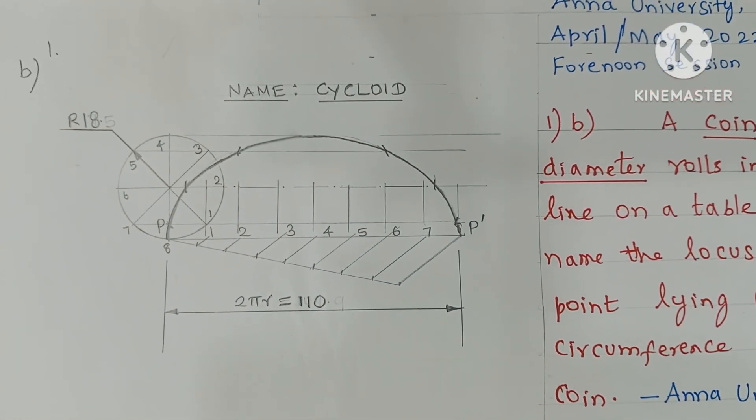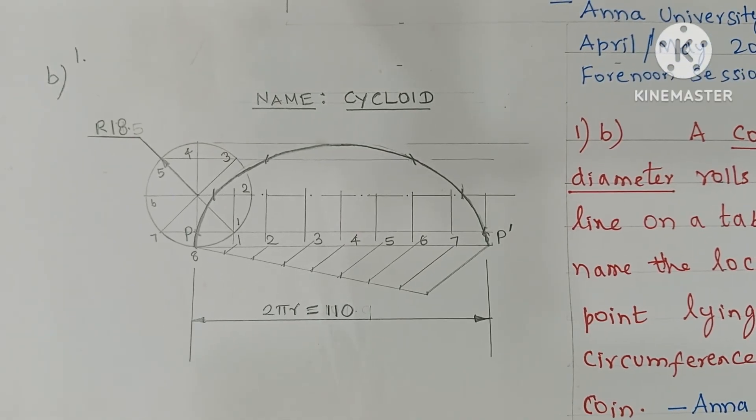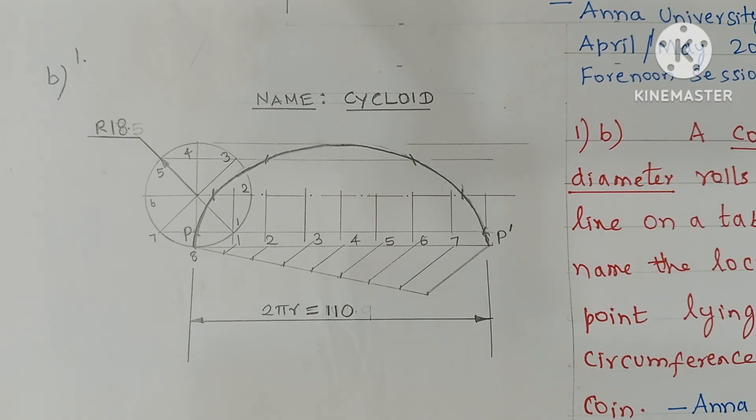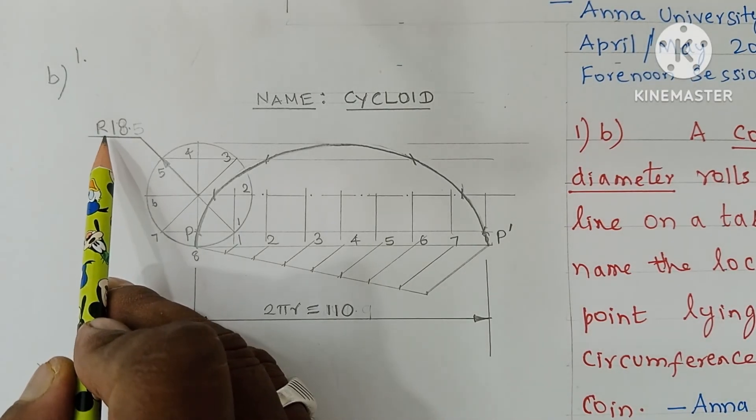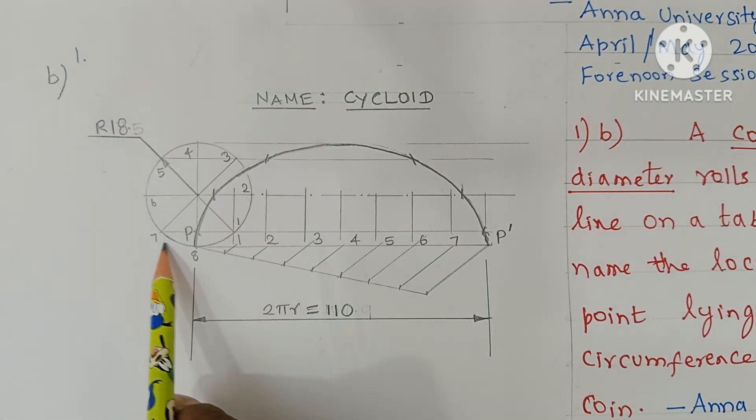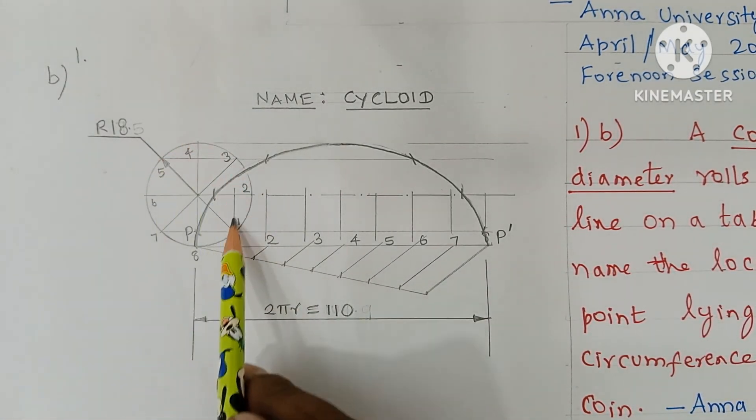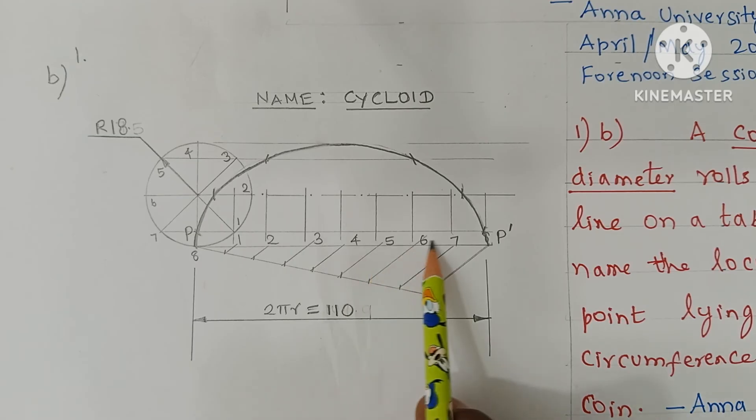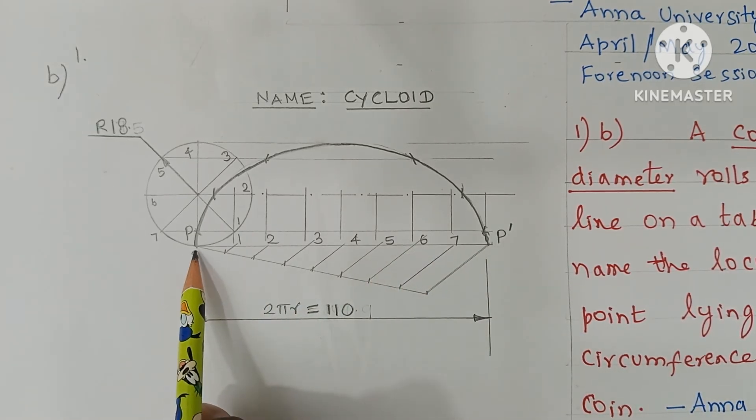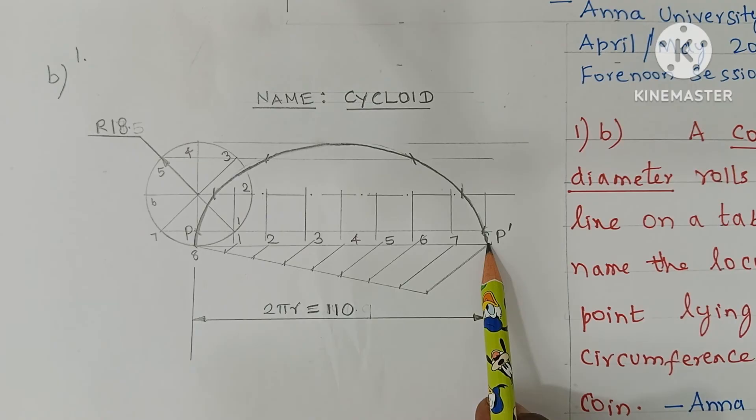Cycloid is the answer diagram. That circle diameter is given as 36 mm. 36 mm, so the radius is 36 divided by 2, 18 mm is the radius of the circle. The circle is the rolling circle or the coin which rolls on the table, horizontal table or the fixed straight line marked as P and another end point is P dash.